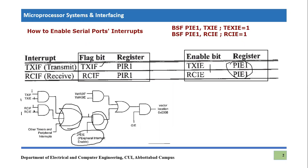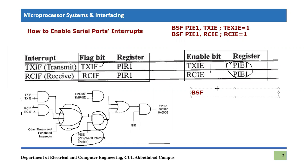We have to make PEIE equal to one as well if we want to receive notification from the transmit and receive interrupt flags. This bit is present in the interrupt control register, so we write: BSF INTCON, PEIE — to set the peripheral interrupt enable bit. Furthermore, you also have to enable the global interrupt bit: BSF INTCON, GIE.